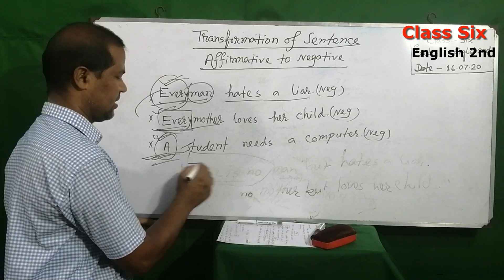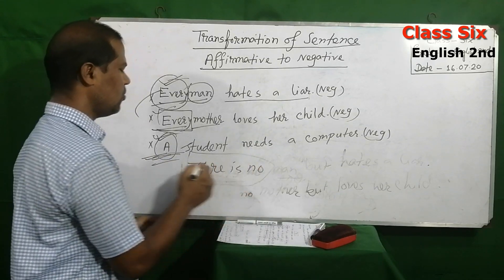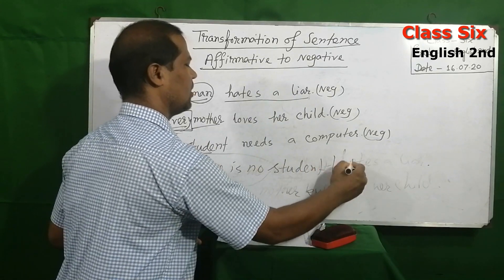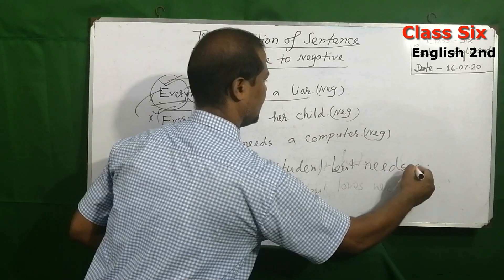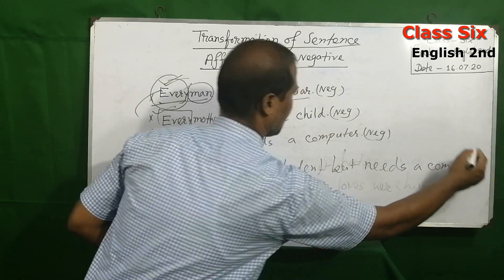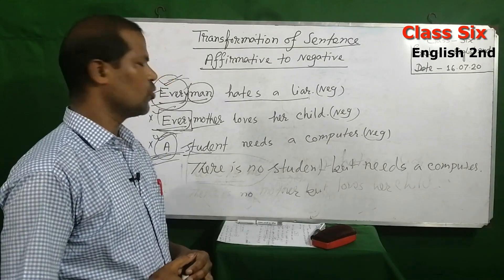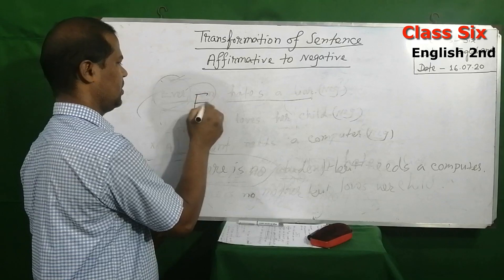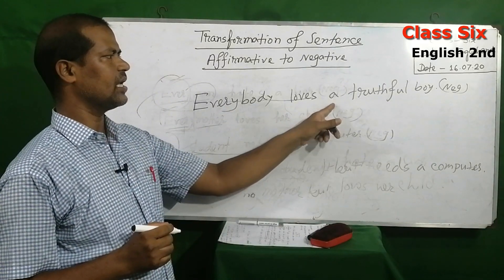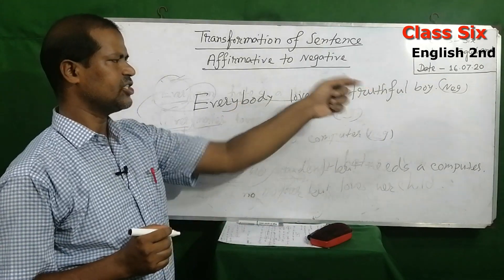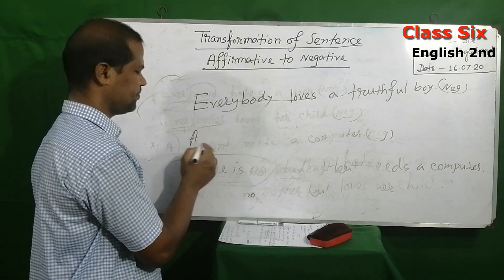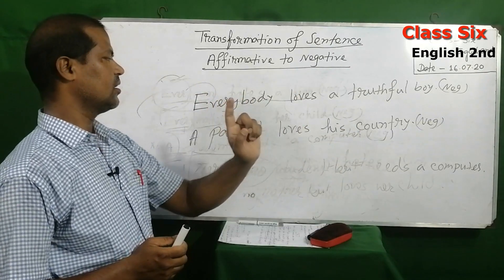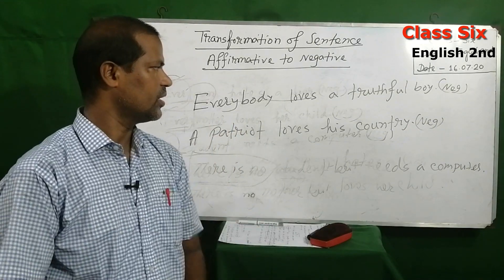For the last sentence with 'a,' write 'There is no student, but needs a computer.' Now try these at home: make 'Everybody loves a truthful boy' and 'A patriot loves his country' into negative form.